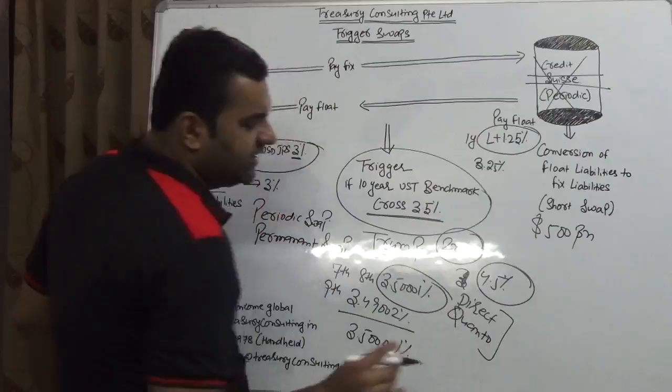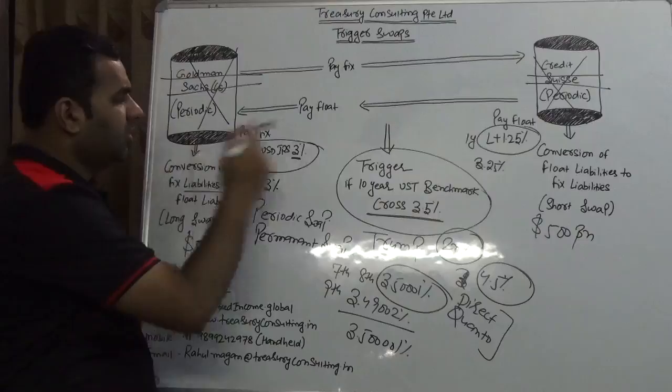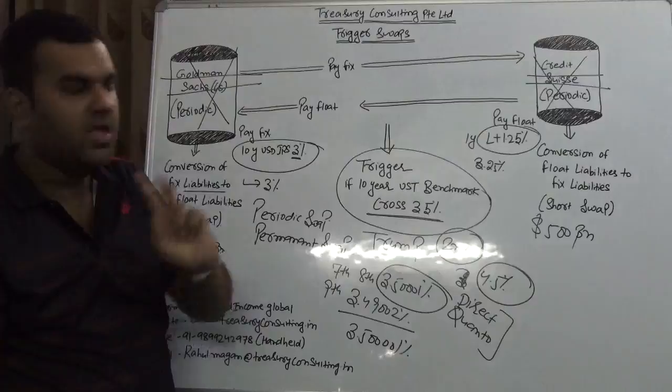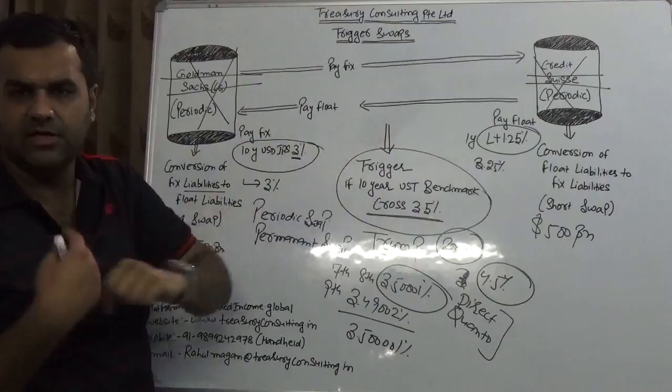One is direct trigger swap - currency on both sides has to be same. It could be dollar-dollar, GBP, euro, Swiss franc, or any currency. Quanto means Goldman Sachs is talking about dollar but Credit Suisse is talking about GBP, which is cable. He's talking dollar, he's talking euro. He's talking dollar, he's talking Japanese yen. So, which is Quanto.